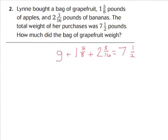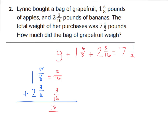Let's find one and five-eighths plus two and three-sixteenths. The denominators aren't the same, so we'll use sixteenths as the common denominator. Five-eighths equals ten-sixteenths. So we have ten-sixteenths plus three-sixteenths, which is thirteen-sixteenths. And we have three wholes altogether. So my apples and bananas together equal three and thirteen-sixteenths.